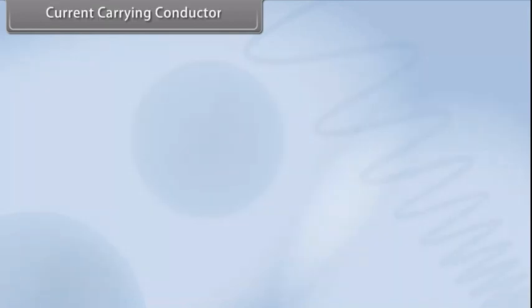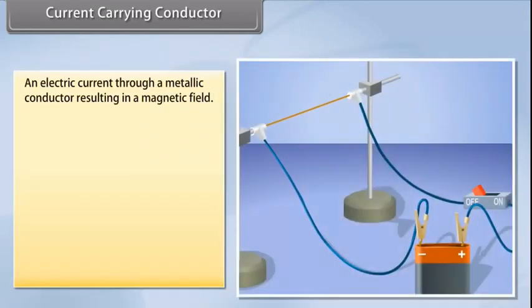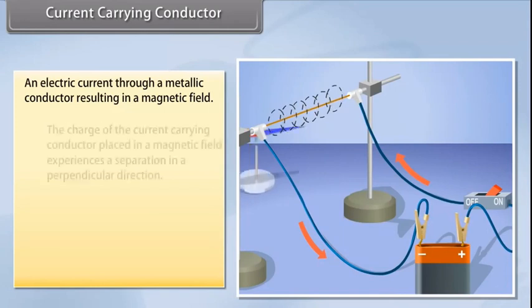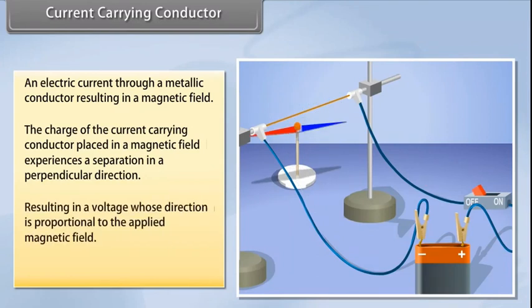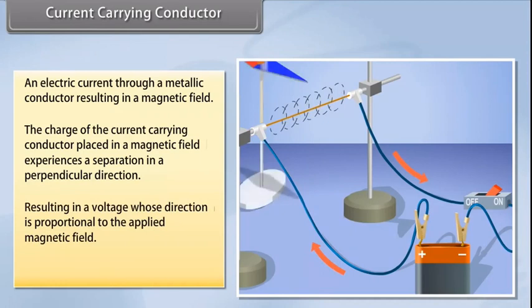An electric current passing through a metallic conductor results in a magnetic field being created around it. The charge of the current carrying conductor placed in a magnetic field experiences a separation in a direction that is perpendicular to the current and the magnetic field. This results in a voltage whose direction is proportional to the applied magnetic field. This effect can also be reversed.